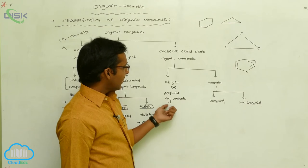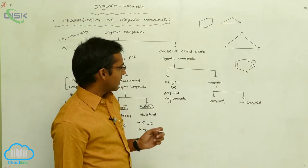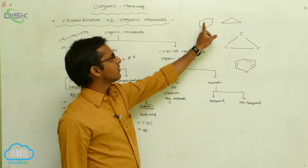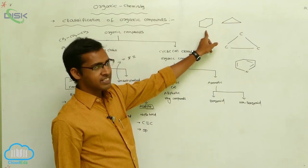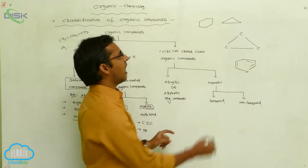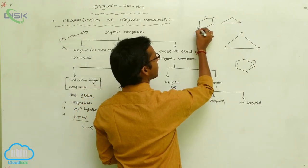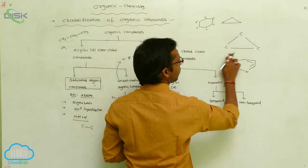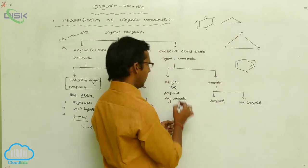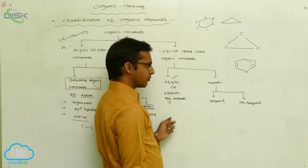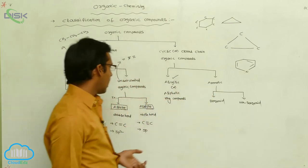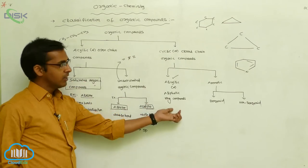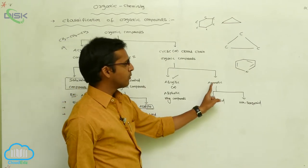In alicyclic or aliphatic compounds, only carbon atoms are present in the ring. For example, cyclohexane has only carbon atoms present, and cyclopropane has only three carbon atoms — these are aliphatic compounds. Aliphatic compounds and saturated organic compounds share the same properties.